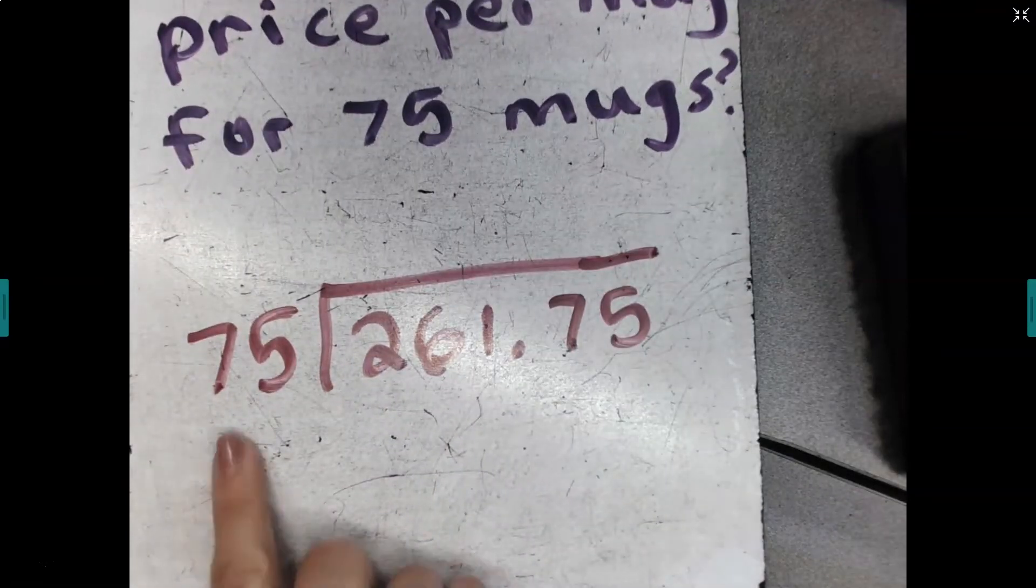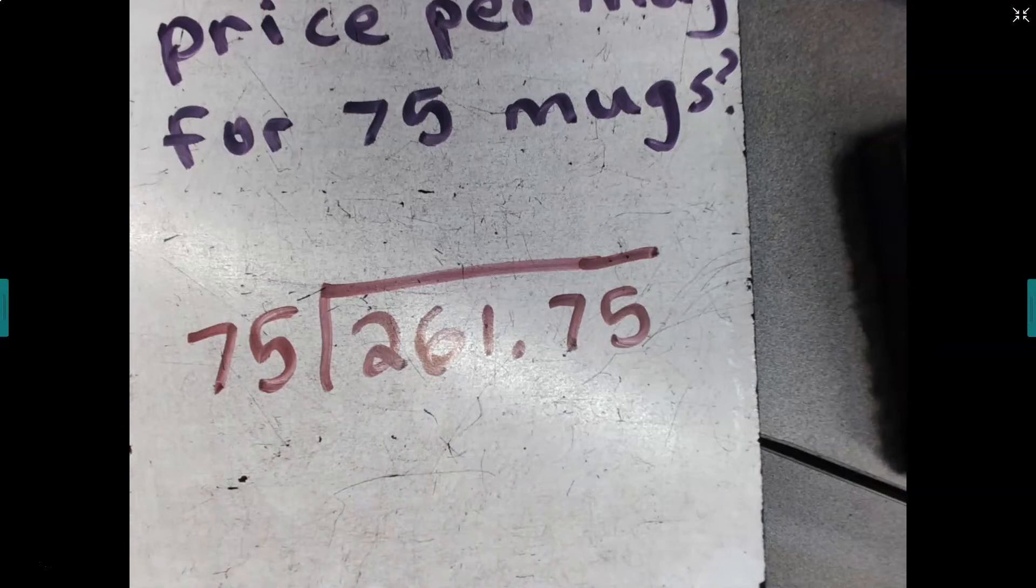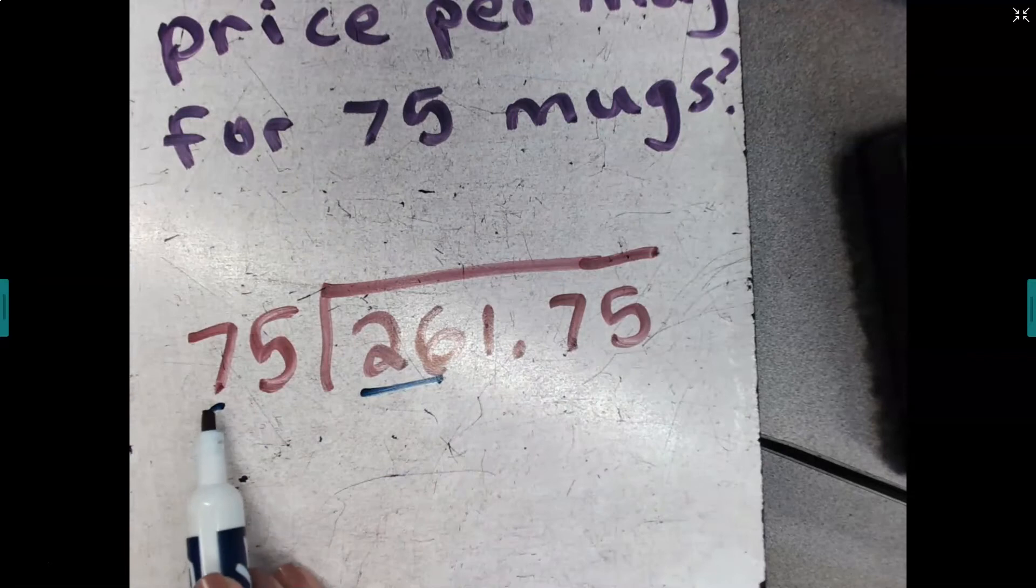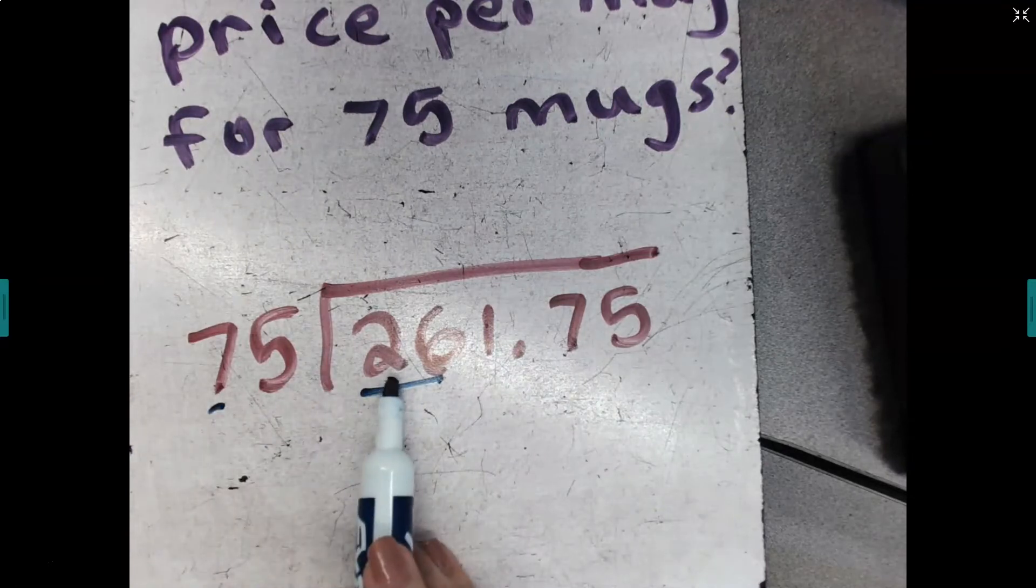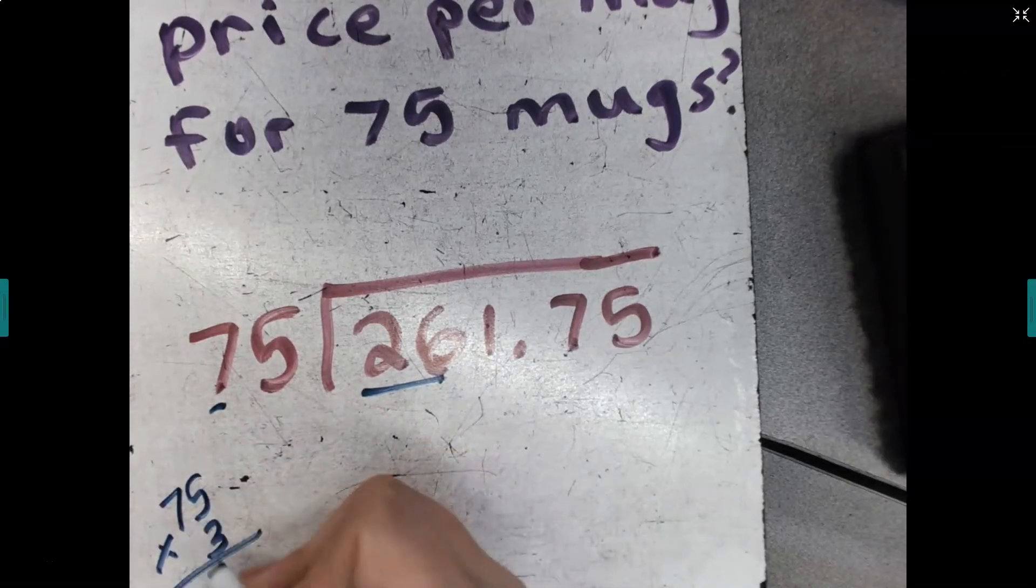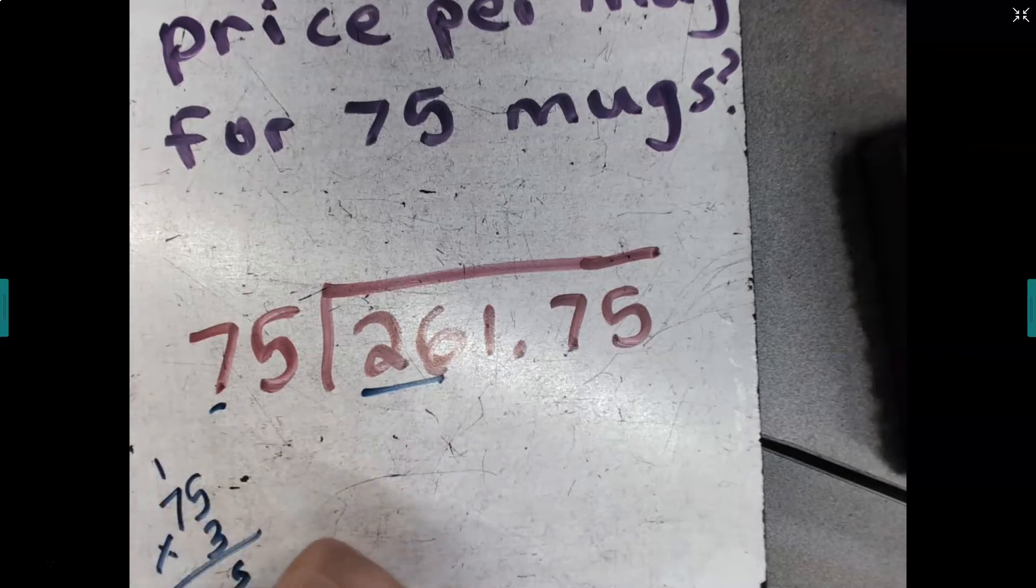So I have, how many groups of 75 can I make from 261? My prediction here using this strategy is that since I could make three groups of seven from 26, I'm going to predict that I can probably make three groups of 75, or at least it will be close. And it is close.